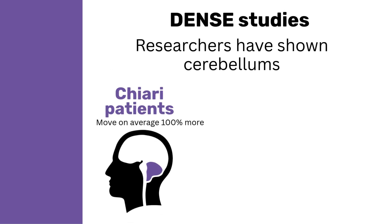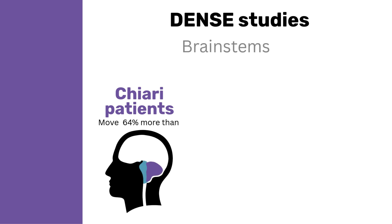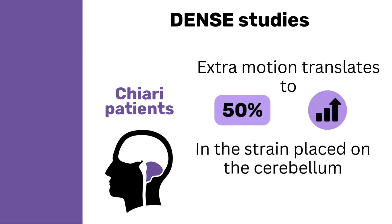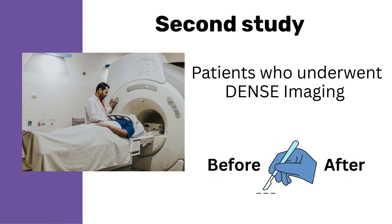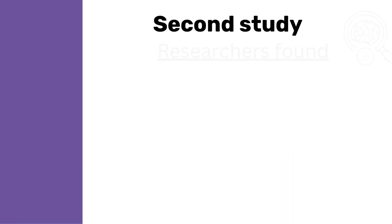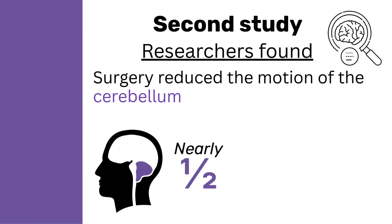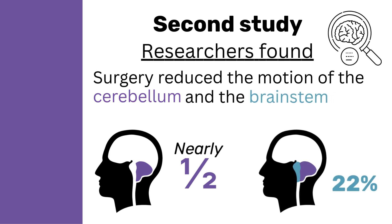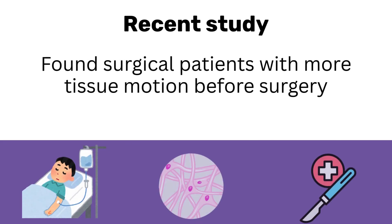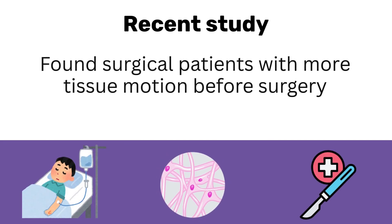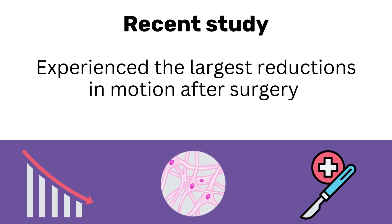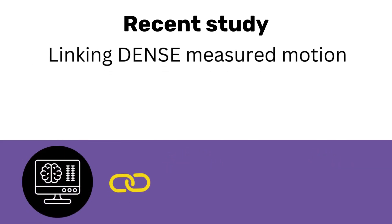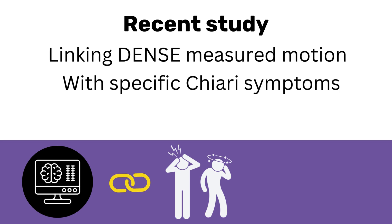In DENSE studies, researchers have shown that the cerebellums of Chiari patients move on average 100% more than healthy volunteers and that their brain stems move 64% more. This extra motion translates to a 50% increase in the strain placed on the cerebellum of Chiari patients. In a second study of patients who underwent DENSE imaging both before and after surgery, researchers found that surgery reduced the motion of the cerebellum by nearly half and the brain stem by 22%. Finally, a recent study found that surgical patients with more tissue motion before surgery experience the largest reductions in motion after surgery. However, linking DENSE measured motion with specific Chiari symptoms has proven to be elusive.